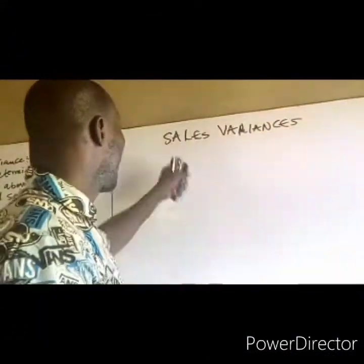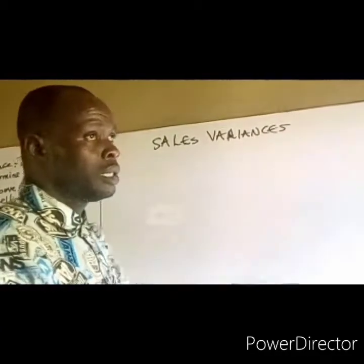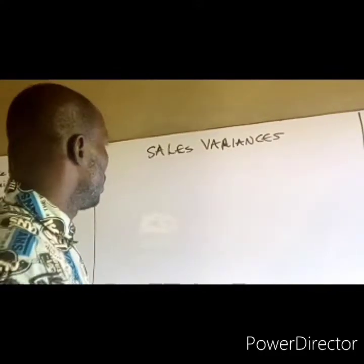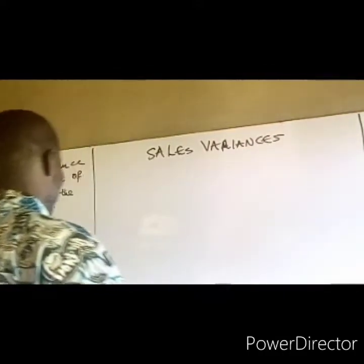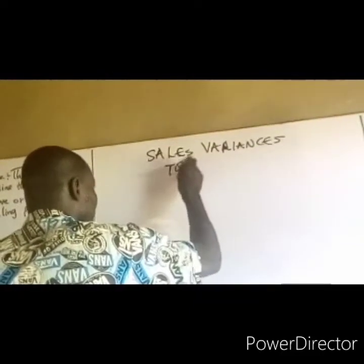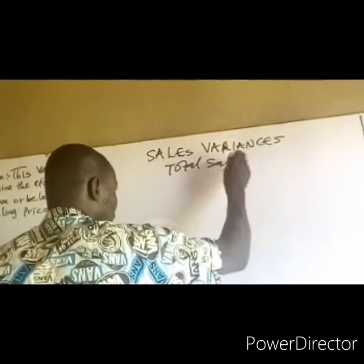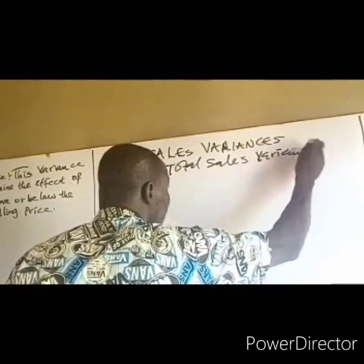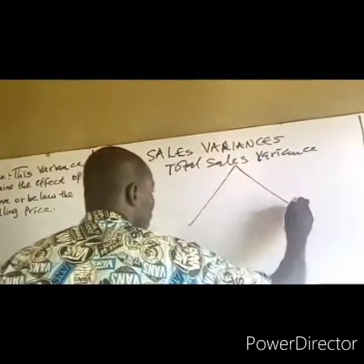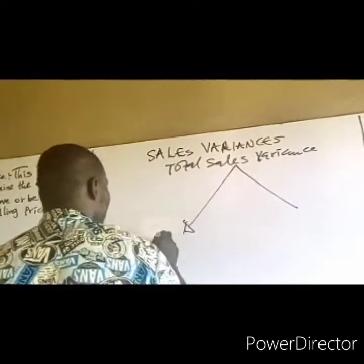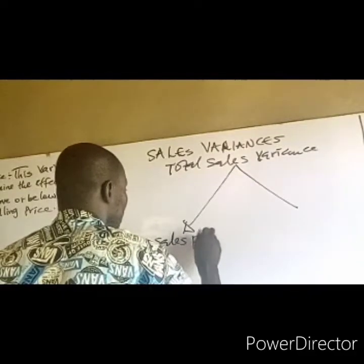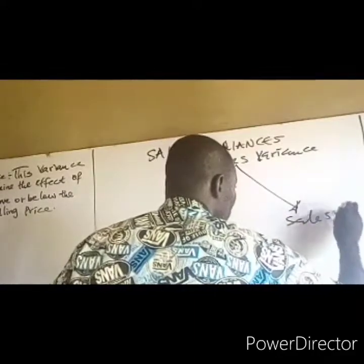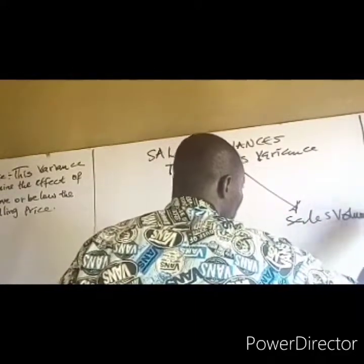In this lecture, I am going to examine sales variances. This is Part 5 of my lecture on variance analysis. The total sales variances will be divided into two: the sales price variance and the sales volume variance.